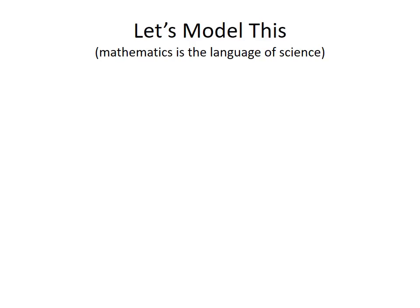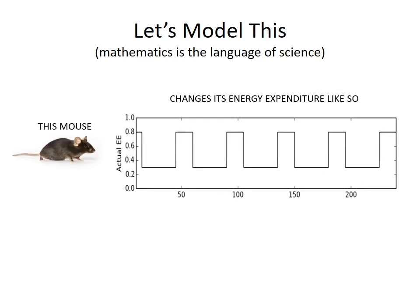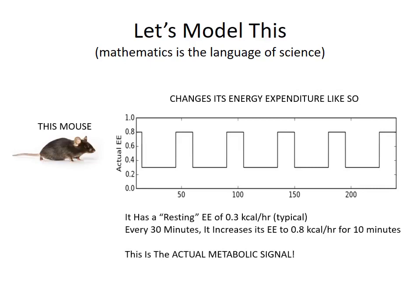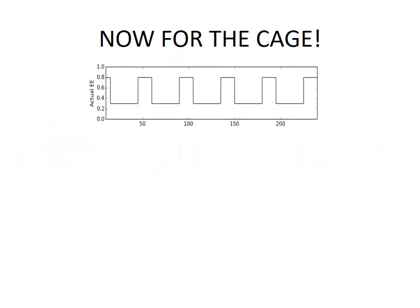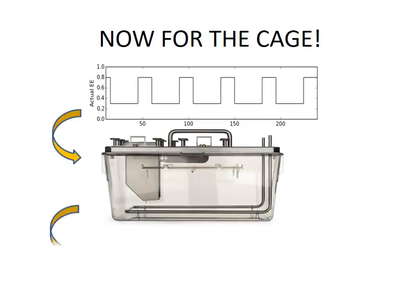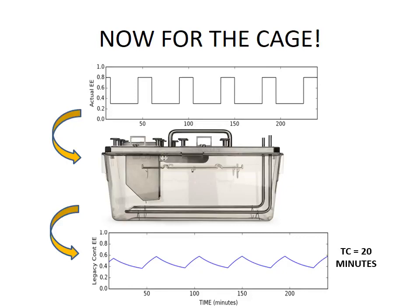So let's model this — mathematics is the language of science. We have this little black six mouse, and it changes its energy expenditure across time, with minutes along the x-axis. It has a resting energy expenditure of about 0.3 kcals per hour, and every 30 minutes it abruptly changes its energy expenditure to 0.8 kcals per hour. Real mice are capable of changing their metabolic rates almost as rapidly as they do in this mathematical model. Now let's look at what the cage does to the signal — here's the actual signal going into the cage, and with a time constant of 20 minutes, this is what the outgoing gas concentrations look like from which you would calculate energy expenditure.